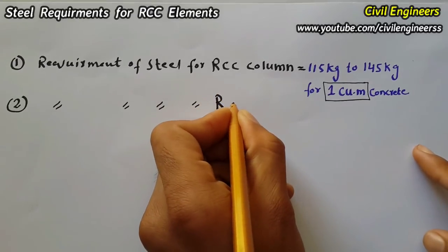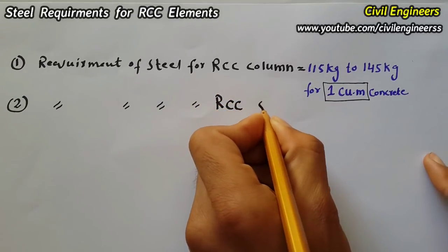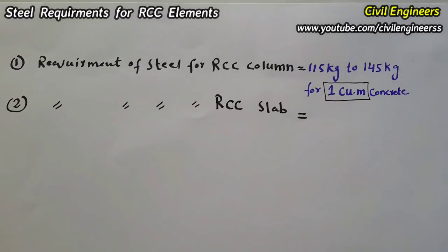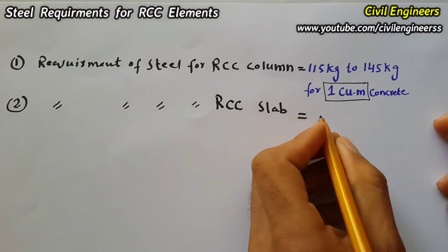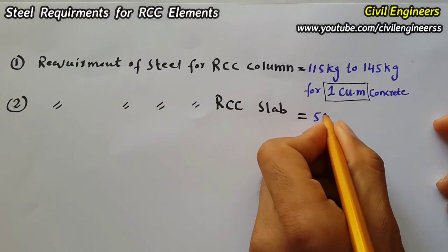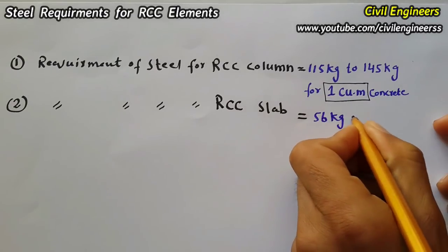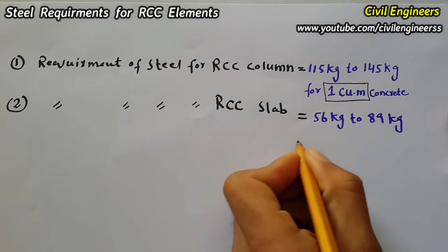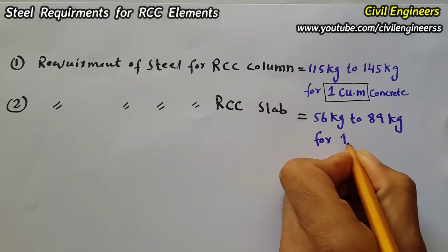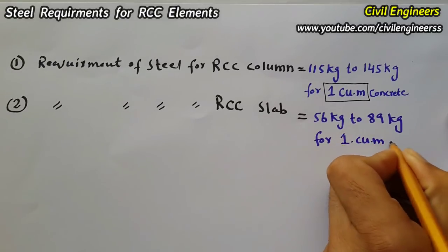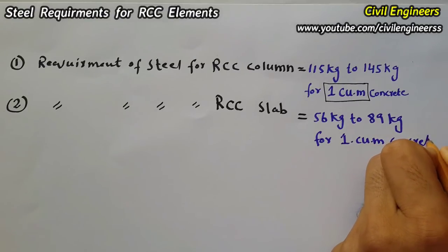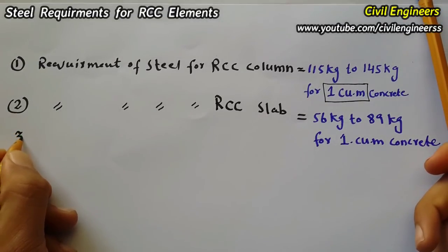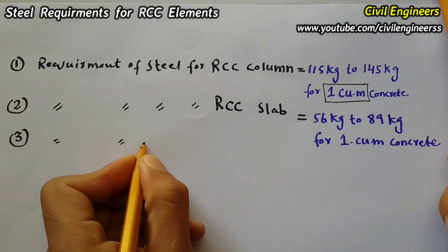The second requirement is steel for an RCC slab. For one cubic meter of concrete, we require 56 kg to 89 kg of steel for an RCC slab.